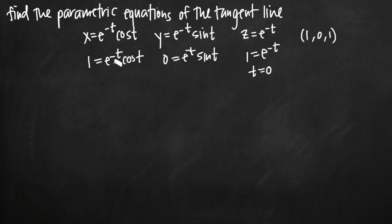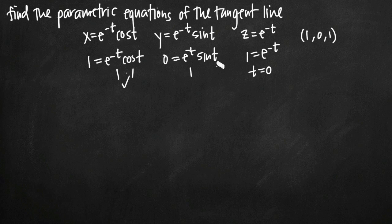Plugging t equals 0 into the first equation: e to the 0 is 1, cosine of 0 is 1, so we get 1 times 1 equals 1 — that works. Plugging t equals 0 into the second equation: e to the 0 is 1, sine of 0 is 0, so we get 1 times 0 equals 0 — that works as well. So t equals 0 is the parameter value that corresponds to the coordinate point (1, 0, 1).